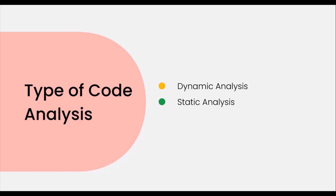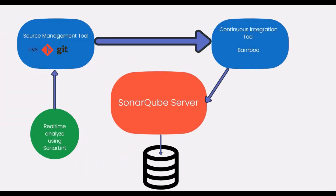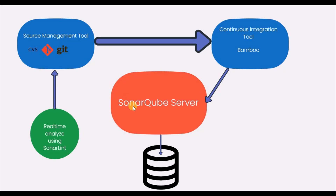In the SonarQube architecture, the process starts with real-time analysis using SonarLint. SonarLint is a plugin installed in the local IDE like Eclipse or IntelliJ. Then code is moved into a source management tool like Git or CVS, then to a continuous integration tool like Bamboo which builds the code, and after analysis it is moved to the SonarQube server which generates the UI report.